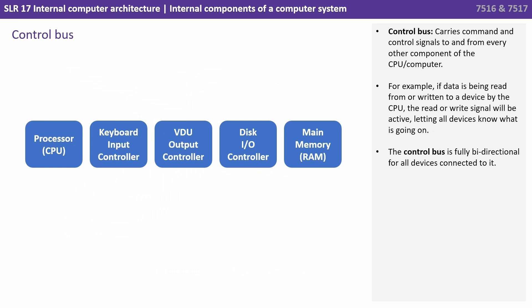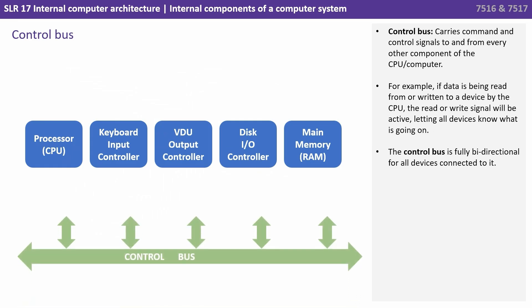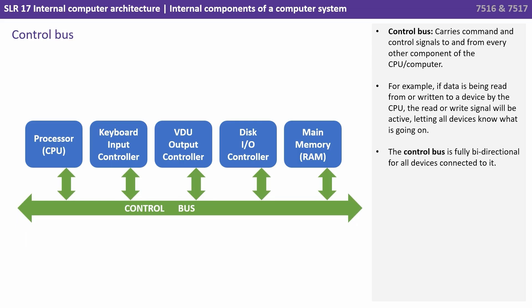Let's look at each bus in more detail, starting with the control bus. This carries the command and control signals to and from every other component of the CPU or computer. For example, if data is being read from or written to a device by the CPU, the read or write signal will be active, letting all devices know what's going on. The control bus is fully bi-directional for all devices connected to it.